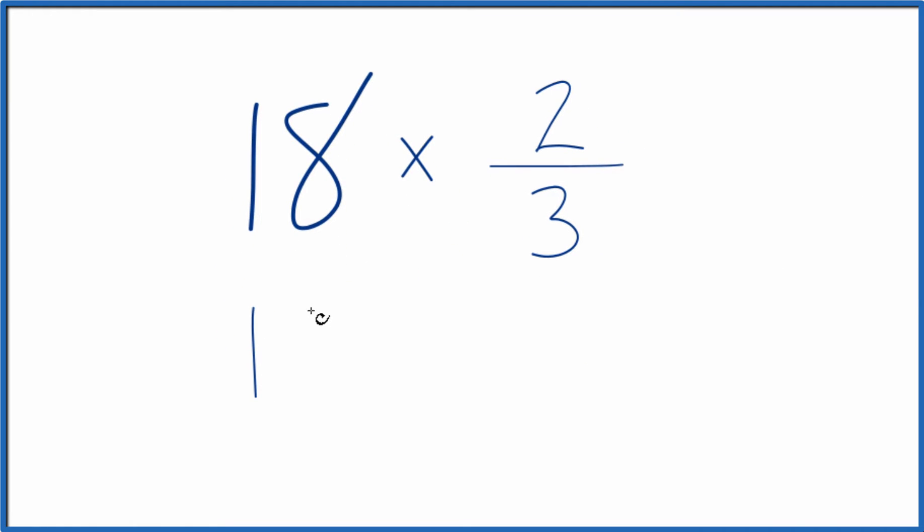Another way to do it would be to take 18, call that 18 over 1. This is still 18 because we're dividing by 1, but now we have a fraction. We can take that fraction and multiply it times two-thirds.